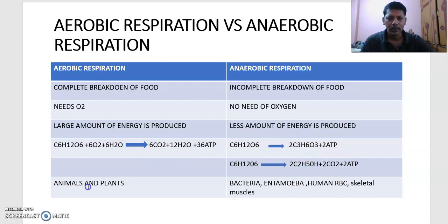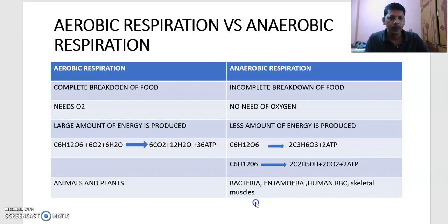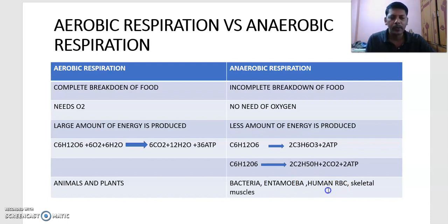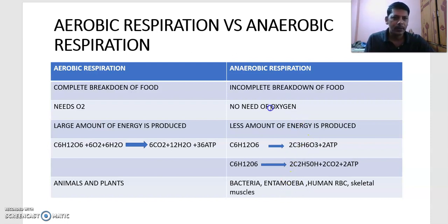Aerobic respiration occurs in higher plants and animals. Anaerobic respiration occurs in bacteria, Entamoeba, human RBCs, and skeletal muscles. During vigorous exercise, anaerobic respiration takes place in skeletal muscles and lactic acid is formed. Mature human RBCs lack mitochondria, so only anaerobic respiration (glycolysis) occurs — the Krebs cycle and electron transport chain do not occur. Entamoeba histolytica, an intestinal parasite causing amoebiasis, also lacks mitochondria and is an obligate anaerobe. Lactic acid bacteria, which convert milk into curd, also perform anaerobic respiration.